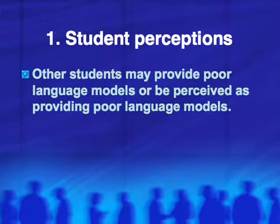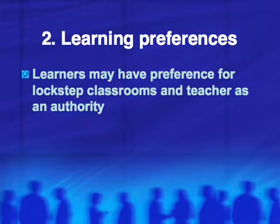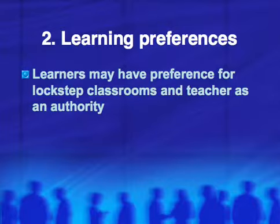Disadvantage one: student perceptions. Students may perceive peers as providing poor language models or inadequate language proficiency, which may turn them off the activity. Also consider learning preferences and learning styles — learners may have a preference for lockstep classrooms with the teacher as authority figure. This may be particularly true of students from cultural backgrounds that only give validity to the teacher-led classroom and see pair and group work as an inferior type of class activity.